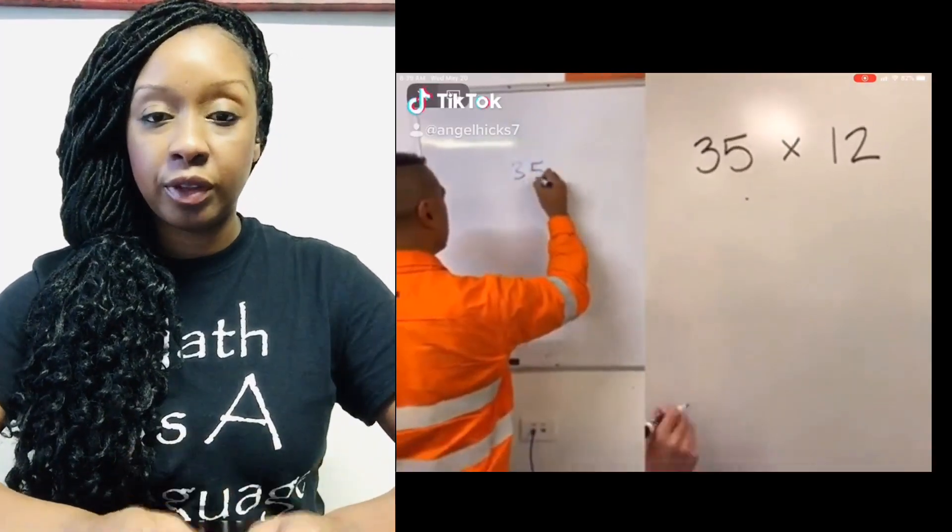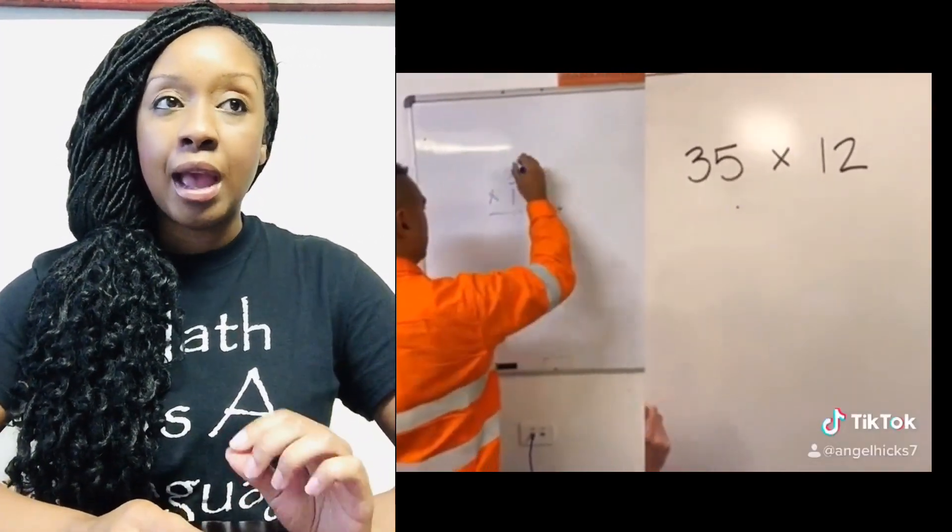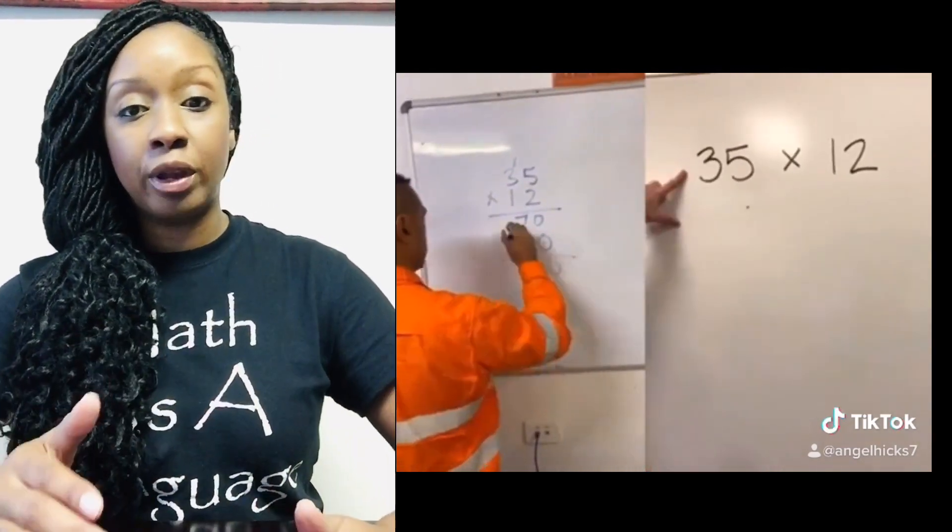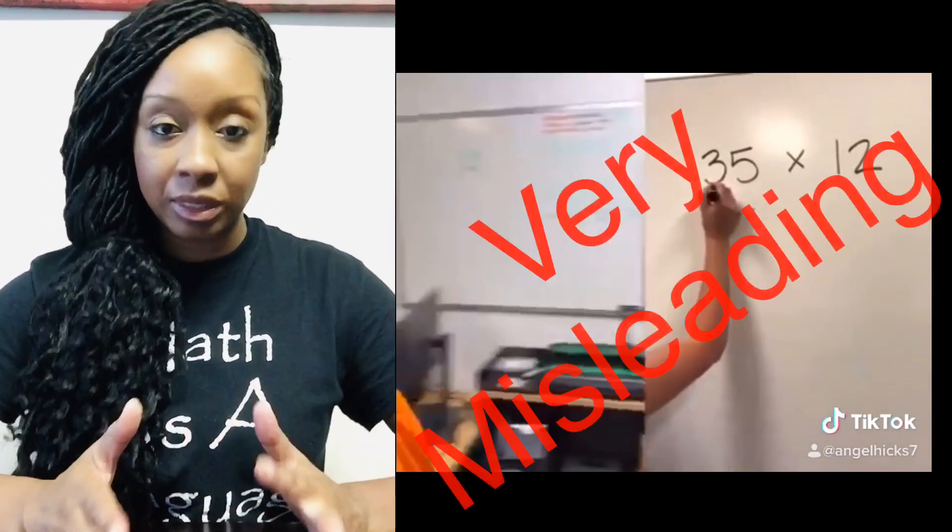The video that is posted on Facebook comparing how to multiply two-digit numbers, the old way versus the new way using an area model, is very misleading.